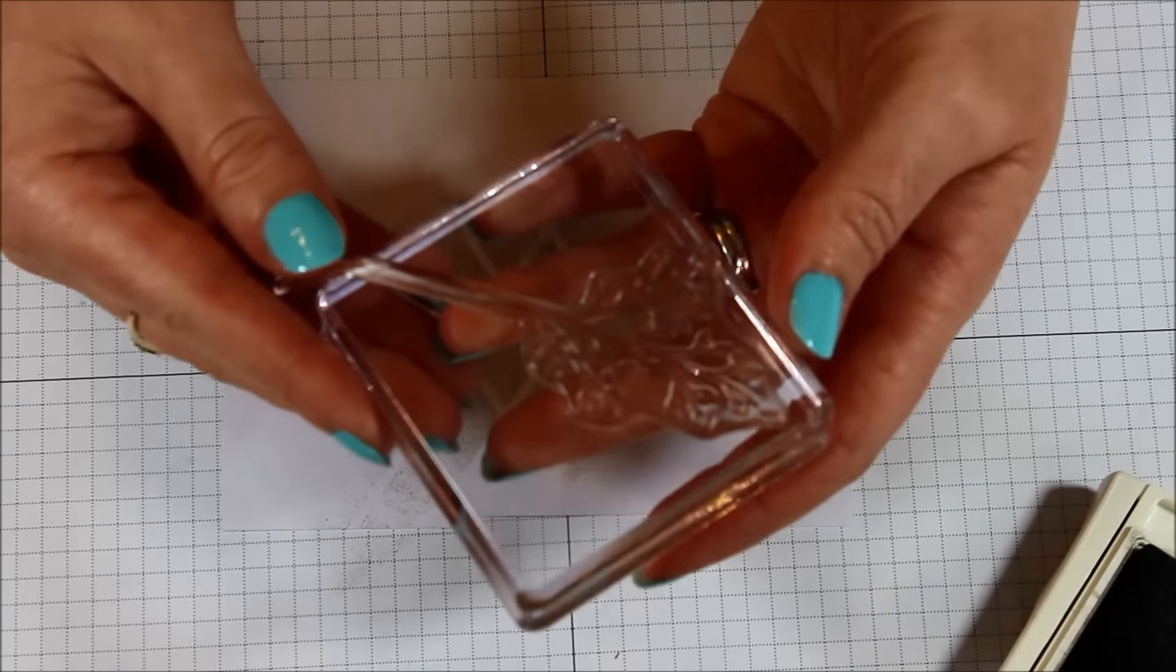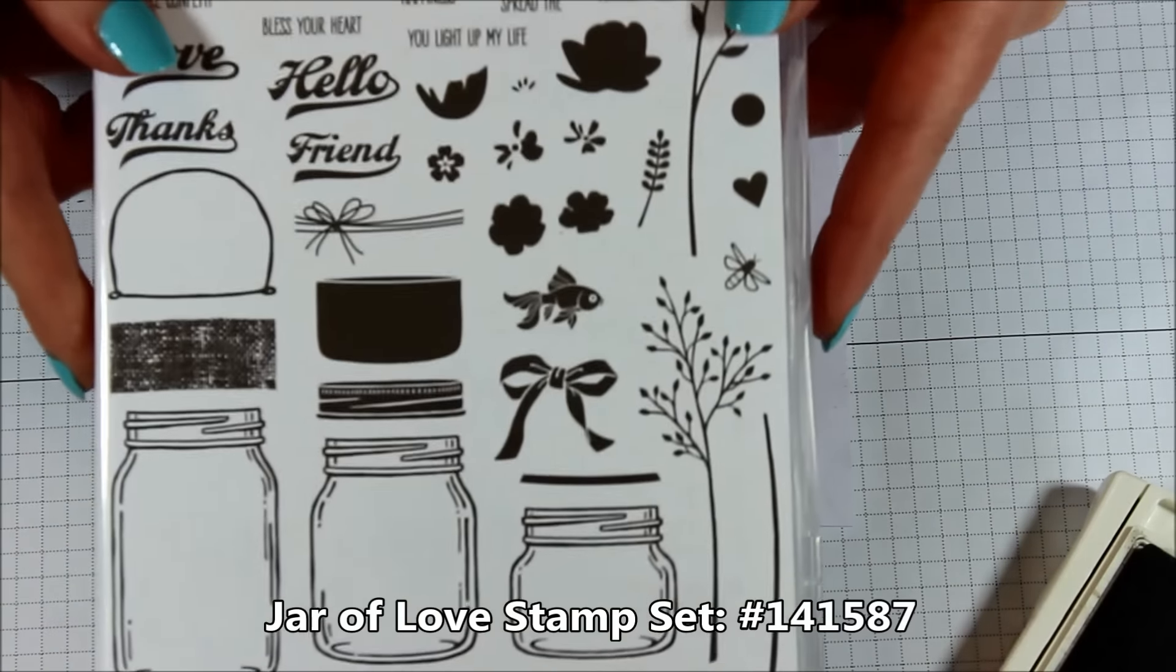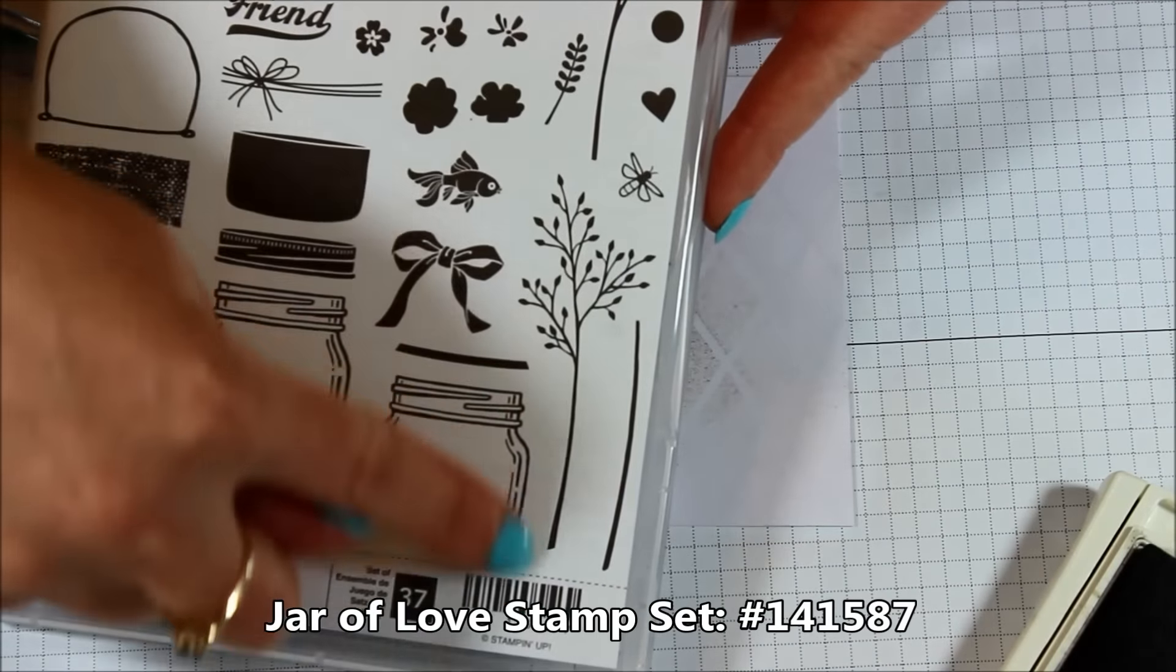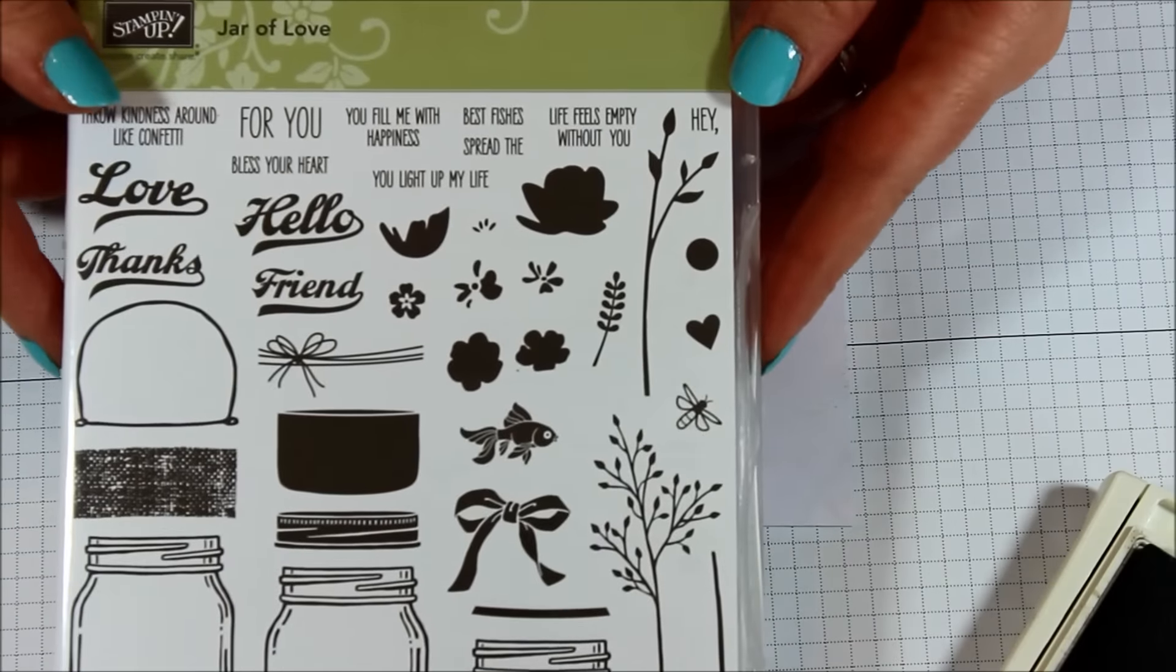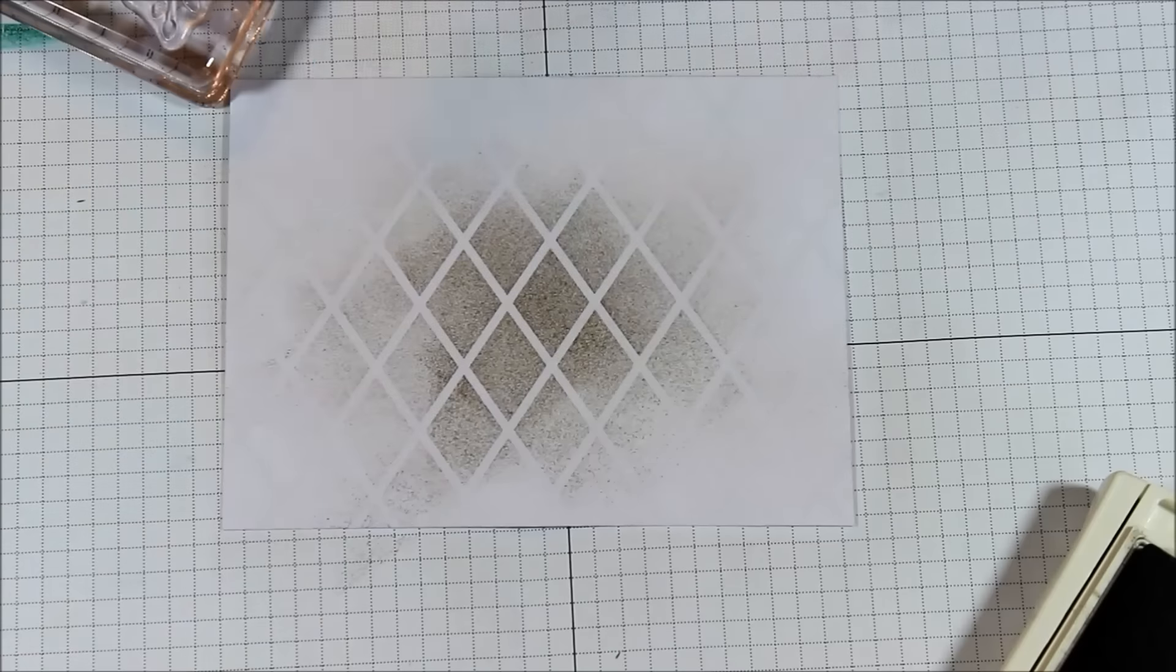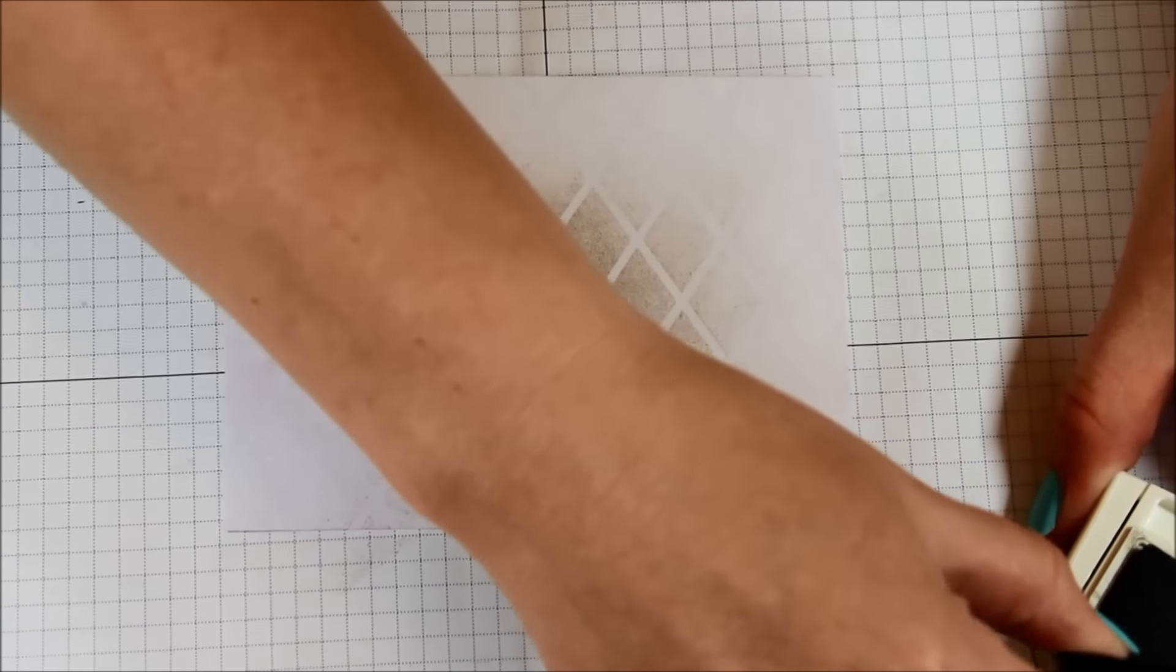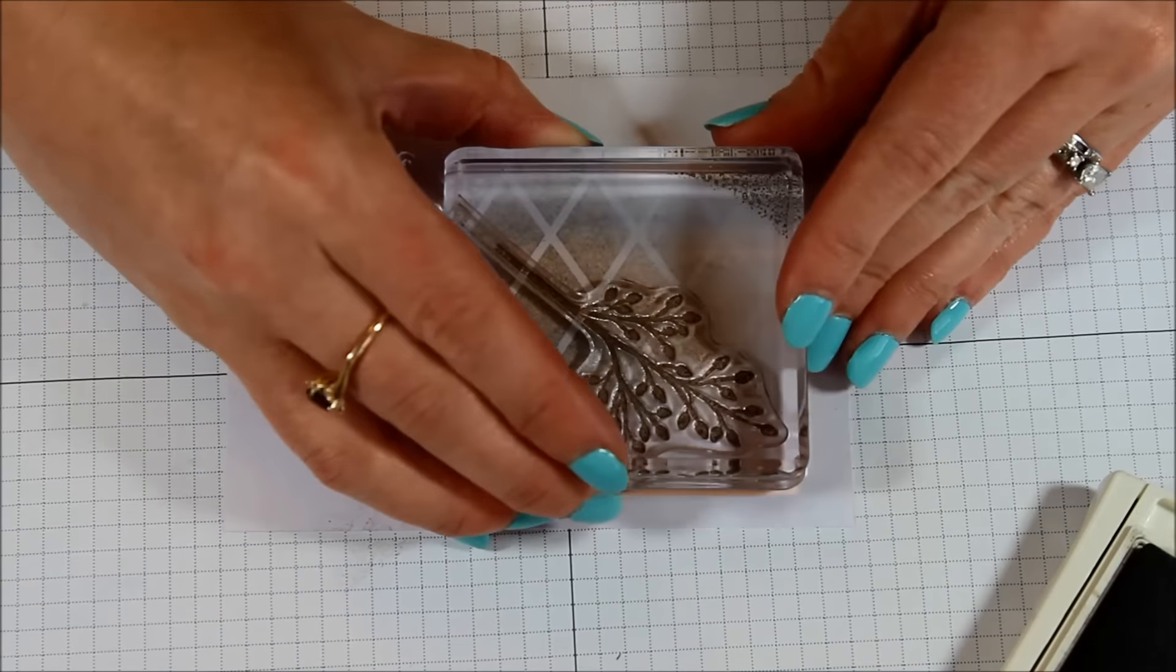Then I have the floral image from the Jar of Love stamp set. So that's this one here. And I'm using this long floral twig. I don't know, since I'm doing it in brown I don't feel like it's very leafy or greenery because it's brown. So it's more like a twig. I'm just going to ink it up in the Tip Top Taupe and I'm going to stamp corner to corner. So this one's going to go down here.